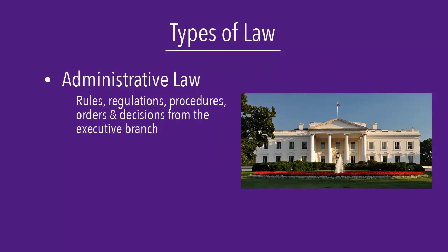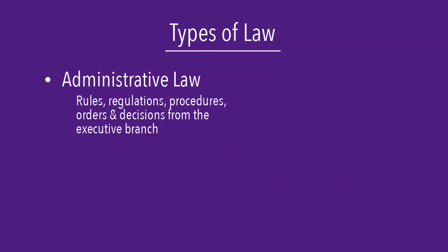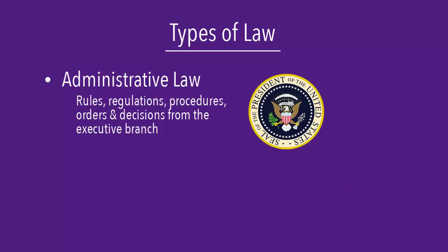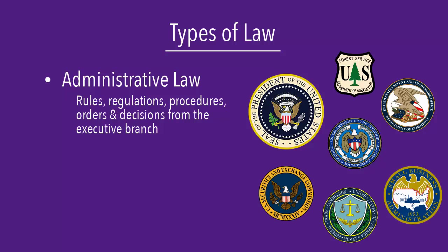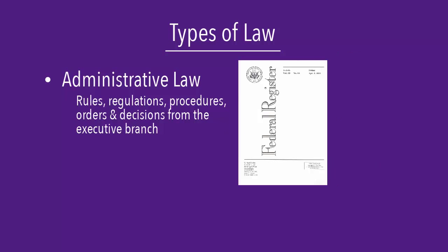Administrative law derives from the executive branch. At the federal level, this includes the President of the United States, agencies of the executive branch, and independent regulatory agencies. Administrative law comes in the form of rules, regulations, procedures, orders, and decisions.